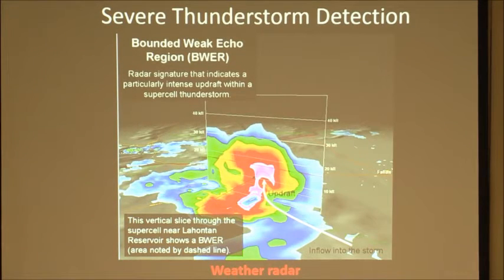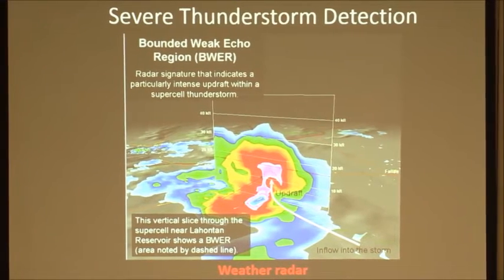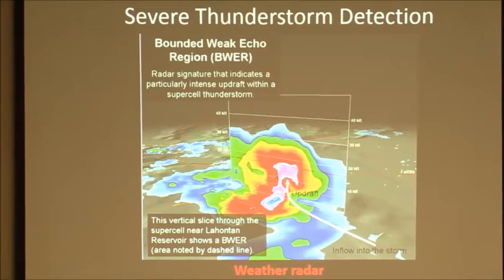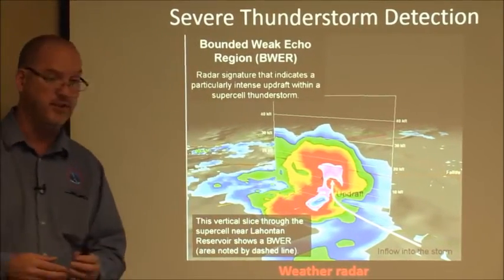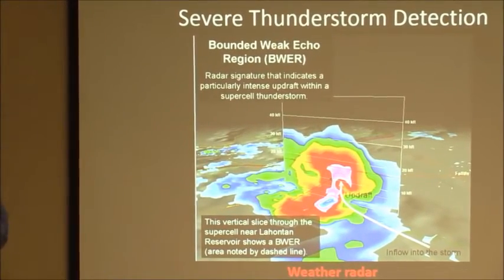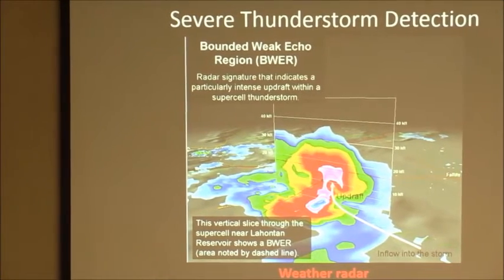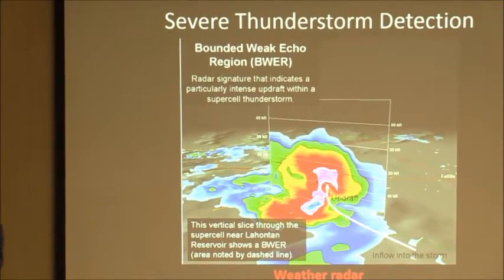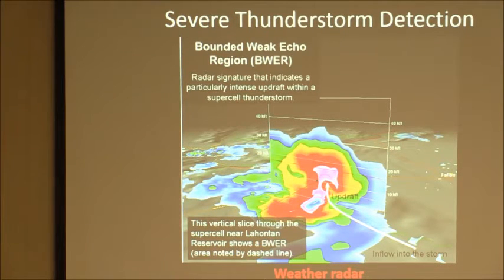Not only are we looking at what the reflectivity, or the strength of the storm is, in terms of these color codes — which you can look at on your phones and laptops — but we're also looking at what it looks like three-dimensionally. Is it tilted? Is it stacked vertically? Some of those features help us in the meteorology world determine that this is a significant storm that could produce severe weather.